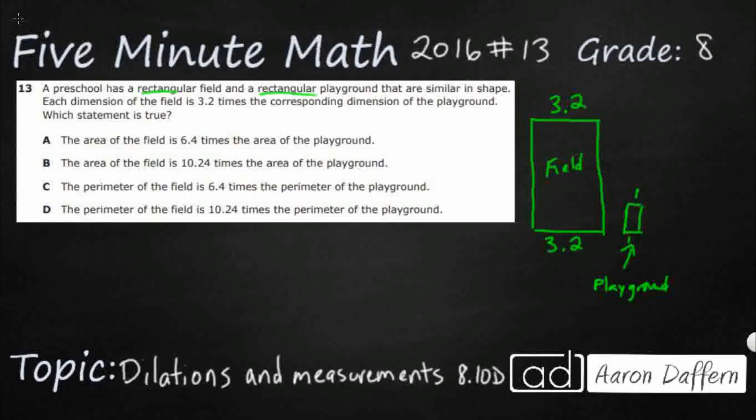Since it can't be a square, we need a second dimension here. Let's just make these two. So 3.2 times two is going to be 6.4. So I've got my dimensions, and since they don't give them to you, you can make them up. Might as well make them easy.